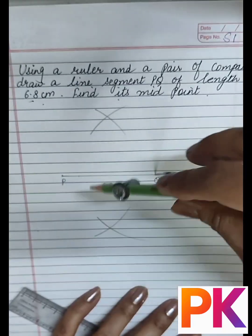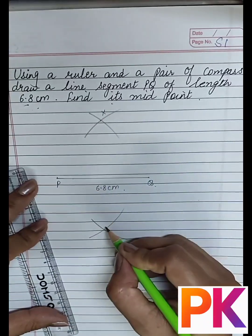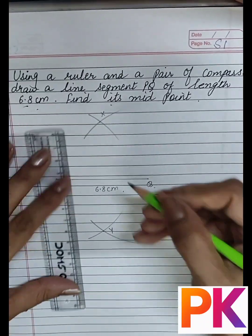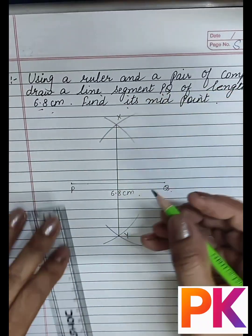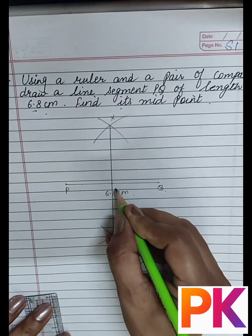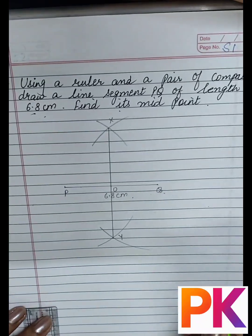Like this, now name these intersecting points as X and Y. Join XY and name this point as O. So this O is the midpoint of line segment PQ.